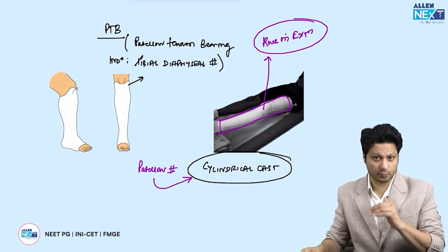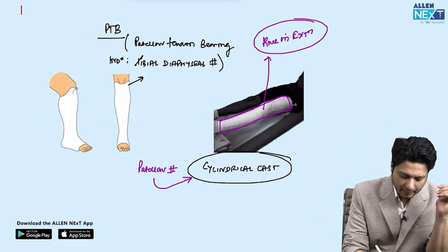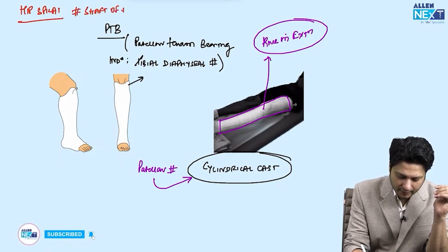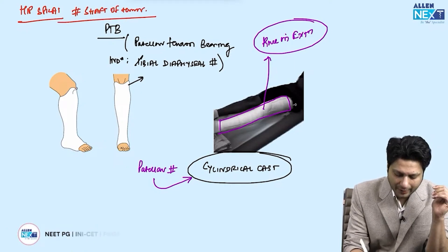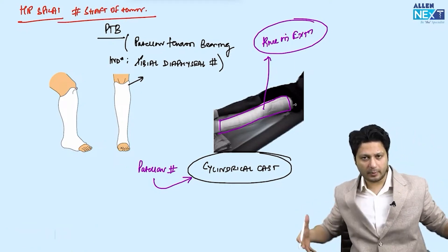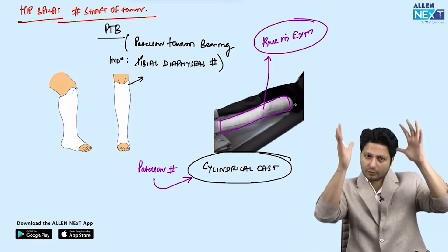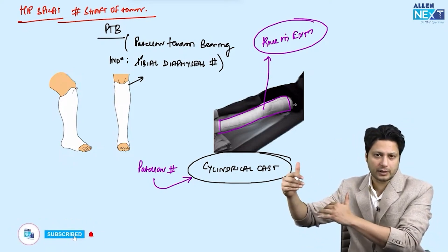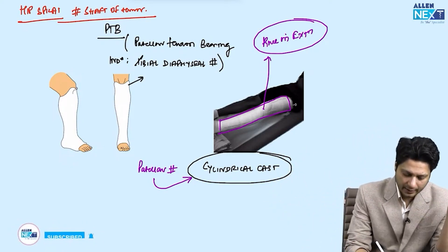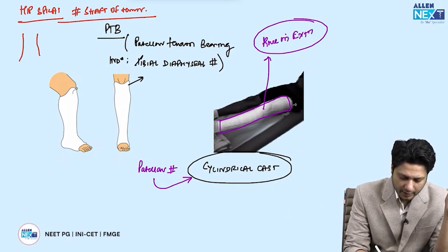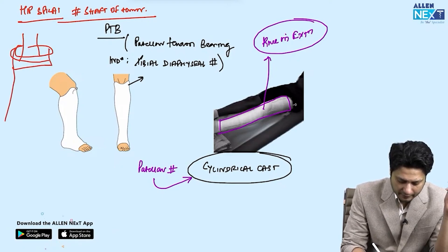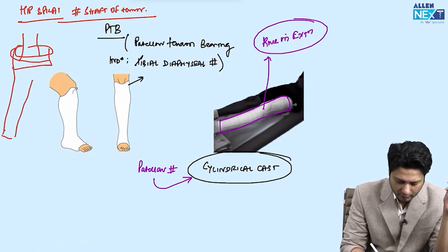Another lower limb cast is the hip spica splint, used in the management of shaft of femur fractures in children. To identify it: there is enclosure of the abdomen, the pelvis, and the entire lower limb on the affected side all the way to the ankle, plus partial enclosure of the opposite lower limb above the level of the knee.